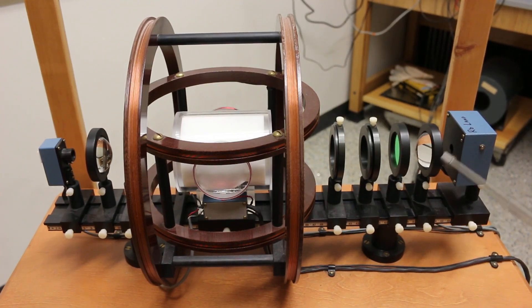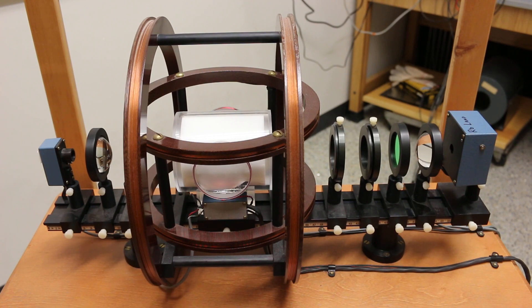In the last video, we visited all the optical components on the rail here, the optical pumping apparatus. In this video, let's talk about these three coils here. They're very important for the experiment.